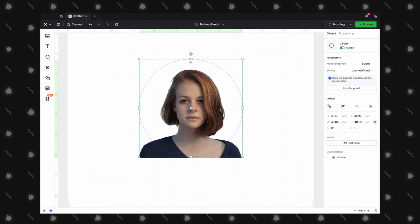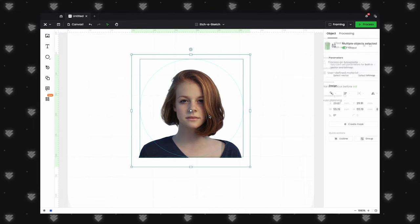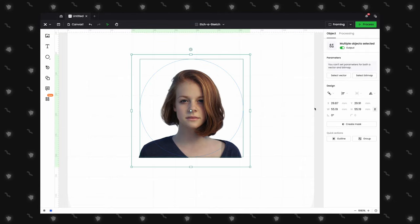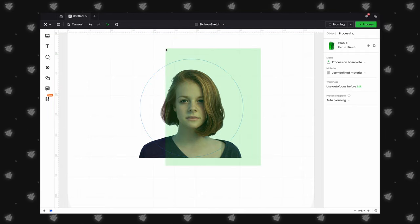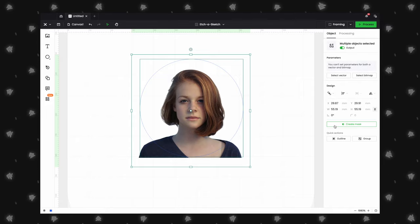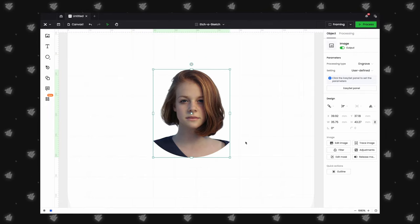To do this, simply position the circle above your image. Select both the circle and image, right-click, and select Create mask or select it from the right side. Now just click Done. Great.